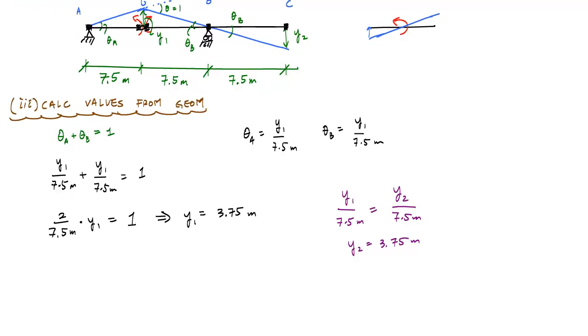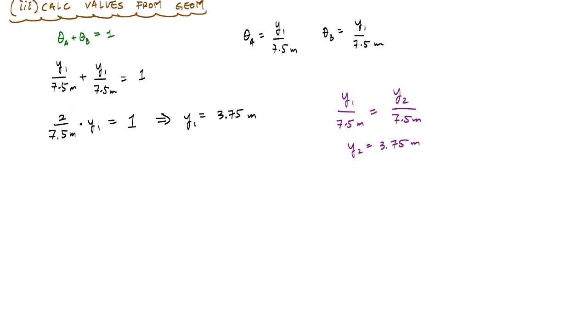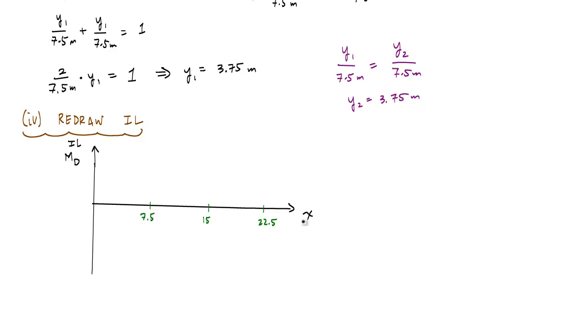And now all you got to do is redraw the influence line on a nice graph, and that will be it. So here's my position axis, and now I just need to draw the influence line magnitudes. And there is my influence line for the internal moment at D. And notice this multiplier, this influence line graph, is in units of meters.